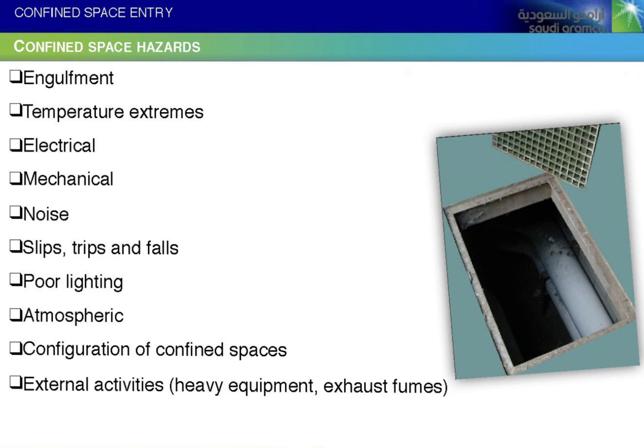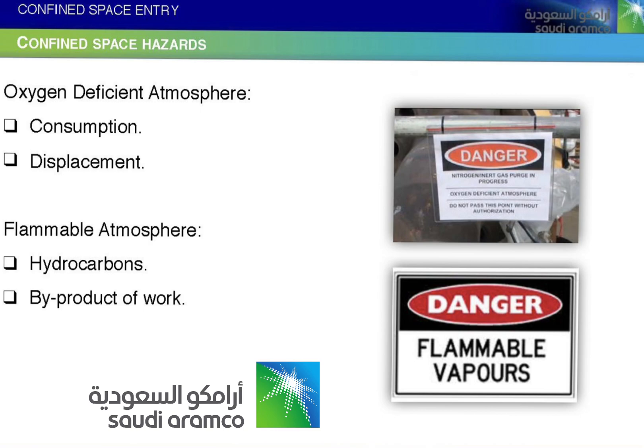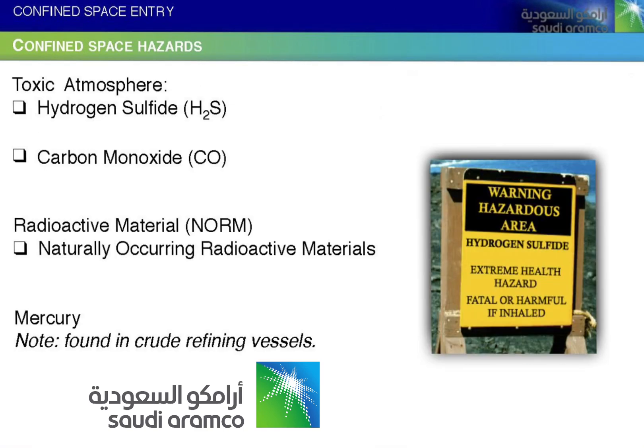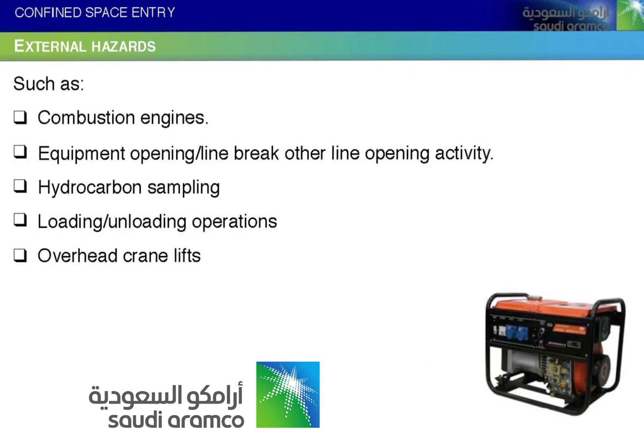Atmospheric hazards include: oxygen-deficient atmosphere from consumption or displacement; flammable atmosphere from hydrocarbons or by-products of work; toxic atmosphere such as hydrogen sulfide (H2S) and carbon monoxide (CO); radioactive material including non-naturally occurring radioactive materials and mercury, found in crude refining vessels.